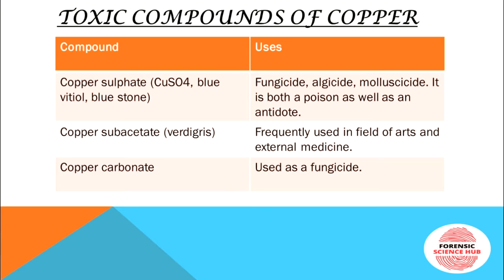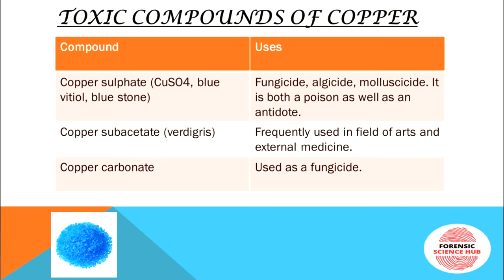Talking about toxic compounds of copper: first is copper sulfate (CuSO4), also called blue vitriol or blue stone. It is used as a fungicide, algicide, and molluscicide. It acts both as a poison and as an antidote — copper sulfate can cause acute poisoning but was also used as a precipitator in heavy metal poisoning and treats gastric and topical exposure to phosphorus.